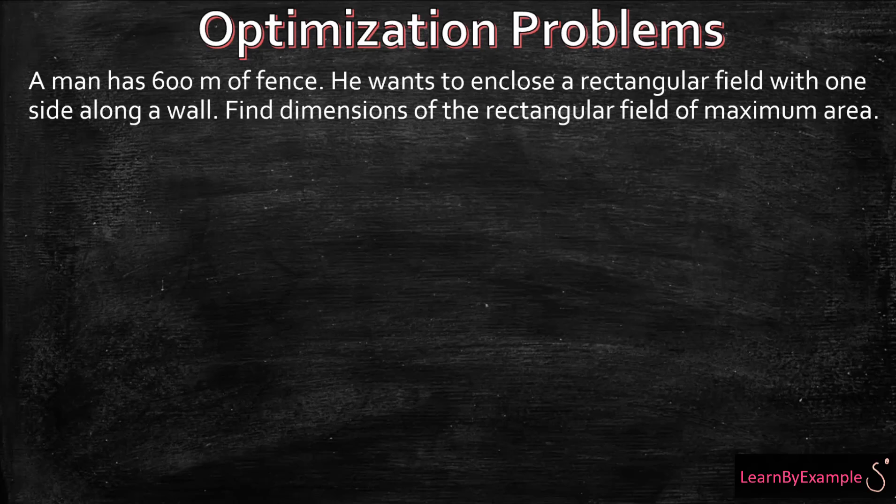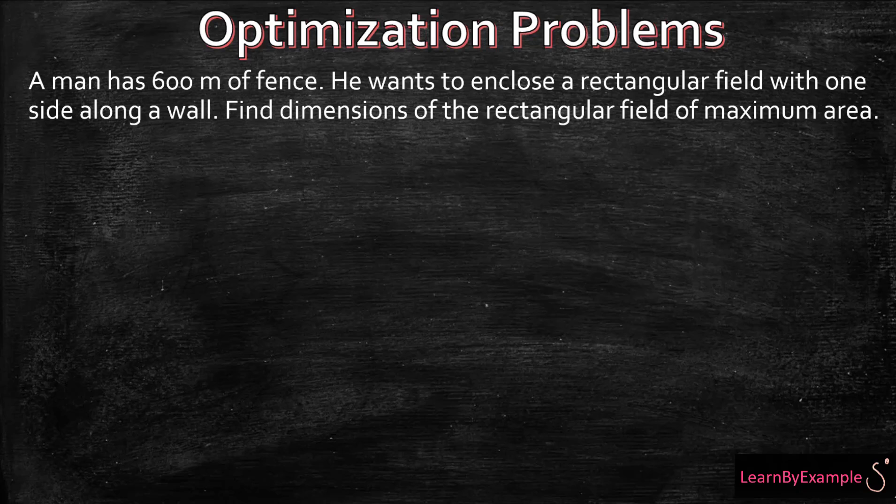Okay everyone, so we're going to be looking at some optimization problems together. In the first example it reads that a man has 600 meters of fence. He wants to enclose a rectangular field with one side along a wall. Find the dimensions of the rectangular field of maximum area.